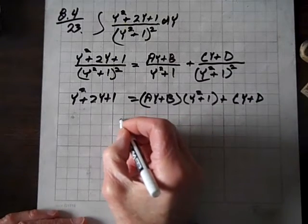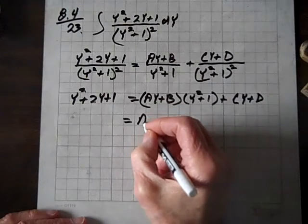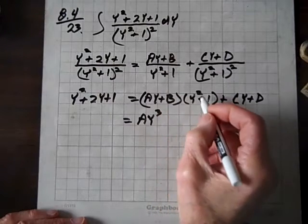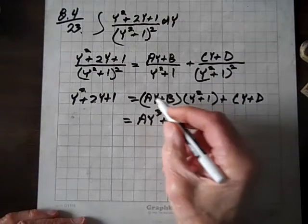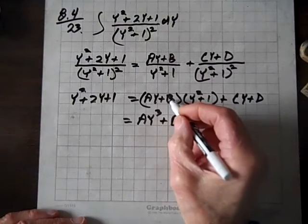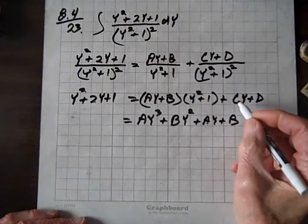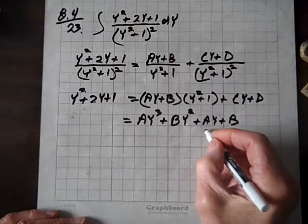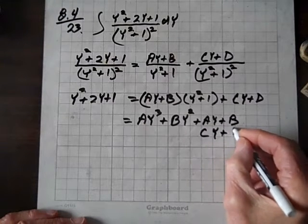Now let's multiply this thing out. Our first term is going to be ay cubed, and then we'll multiply b times y squared and get by squared. Then ay times 1 is plus ay, and b times 1 is plus b. And now let's add in cy and d. So in the y column we have cy, and in the constant column we have d.